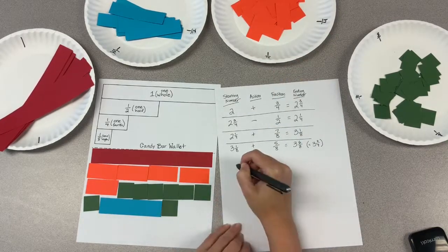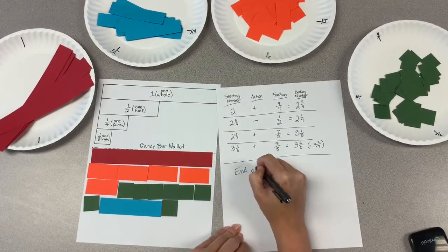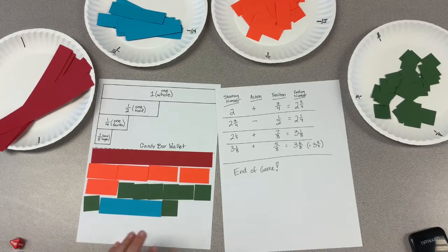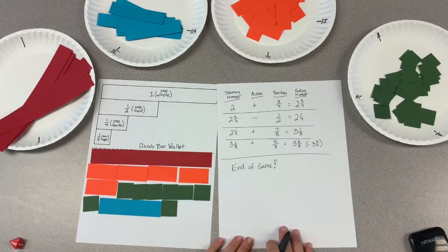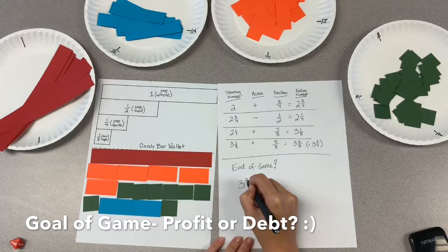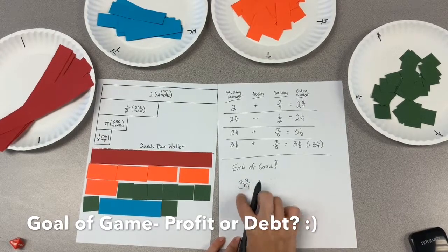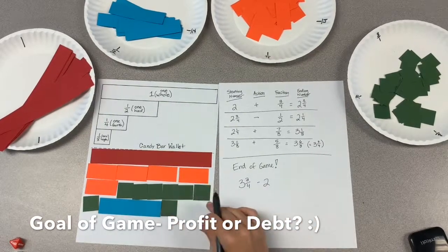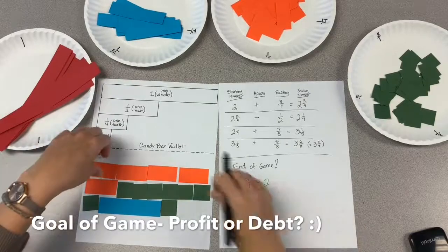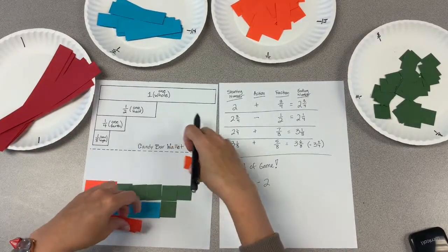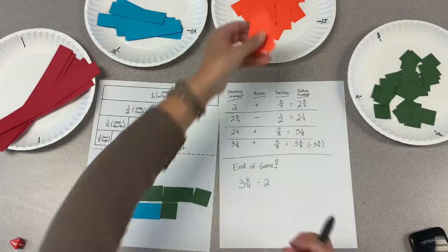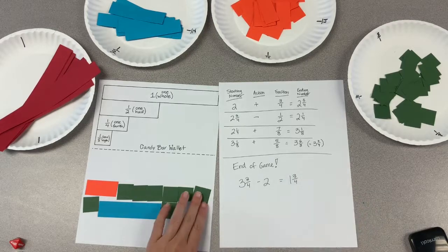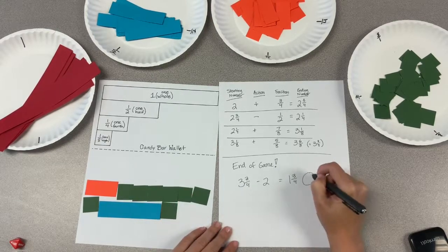At the end, I would have students decide whether they profited or if they went into debt. We would start with what our ending number was, they would pay the bank back how much they started with, which in this case was two wholes. And clearly when I pay the bank back, I see that I end up with a profit of one and three fourths.